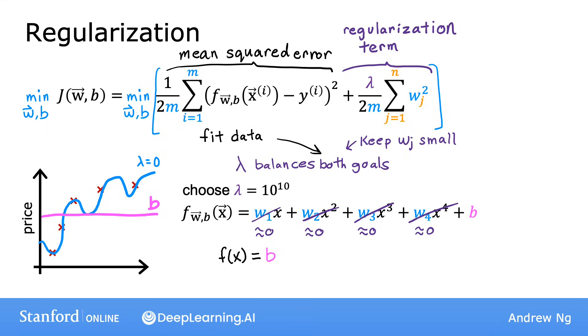To recap, if lambda is zero, this model will overfit. If lambda is enormous, like 10 to the power of 10, this model will underfit. And so what you want is some value of lambda that is in between that more appropriately balances these first and second terms of trading off minimizing the mean squared error and keeping the parameters small. And when the value of lambda is not too small and not too large, but just right, then hopefully you end up able to fit a fourth order polynomial keeping all of these features, but with a function that looks like this.